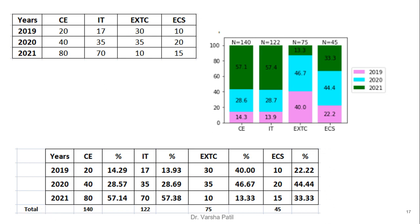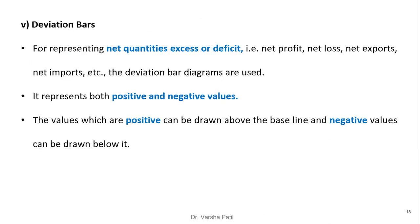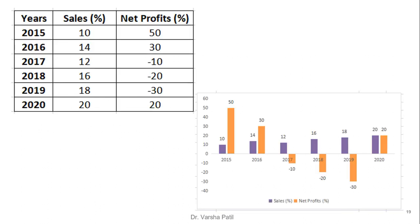Deviation bar diagrams are used for representing net quantities such as excess or deficient, net profit or loss, and net exports or imports, because values can be positive or negative. Positive values are drawn above the baseline and negative values are drawn below the line. For example, years with sales and net profit are given — when net profit is negative it is represented by a bar below the line, and positive net profit above the line, enabling easy comparison.